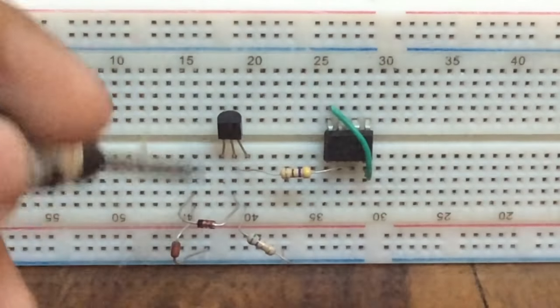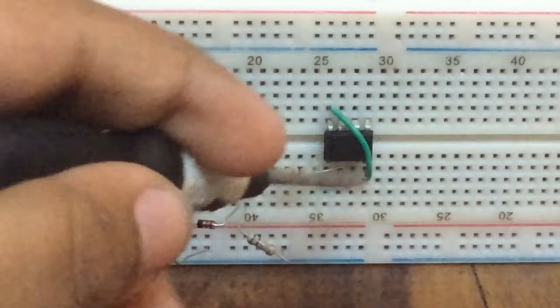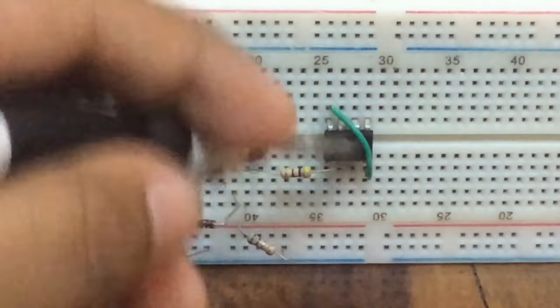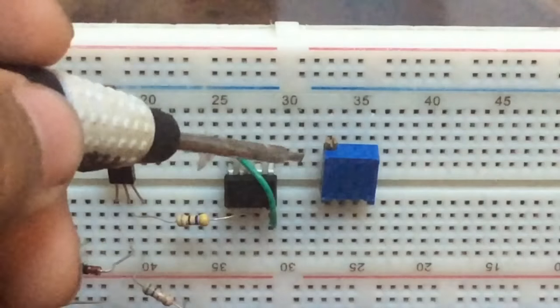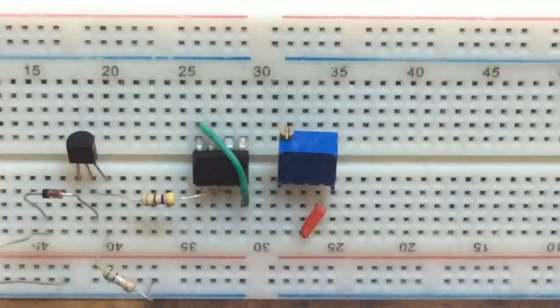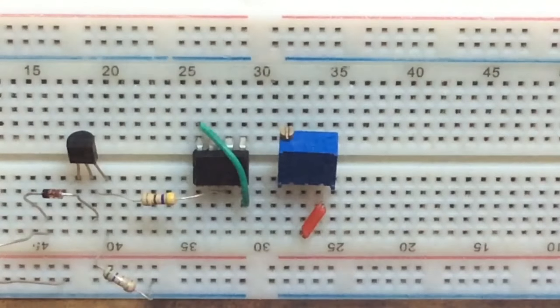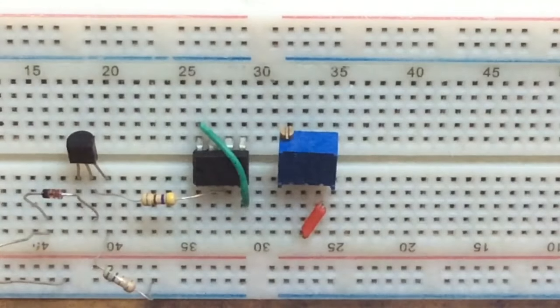and the other end to pin 3 of the 555 timer IC. Place the potentiometer on the breadboard. Connect the middle pin of the potentiometer to the rightmost pin of the potentiometer.